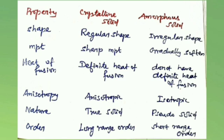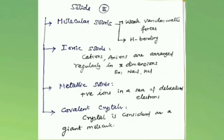These are the distinguishing points between amorphous and crystalline solids. Crystalline solids are classified based on the nature of attraction between constituent particles into four categories: molecular solid, ionic solid, metallic solid, and covalent solid.